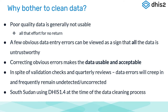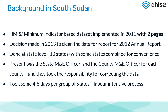South Sudan was using DHIS 1.4 at the time of the data cleaning process. It was a minimum indicator-based data set implemented in 2011. Based on indicators, they defined the data elements, put them into data collection tools — two pages with one page for EPI. A decision was made in 2013 to produce an annual HMIS report for 2012, but on reviewing the data, it quickly became apparent that the data was not good enough to be used. So the decision was made to go back and clean the data to make it usable.